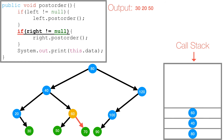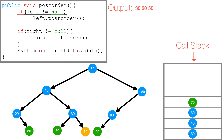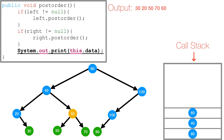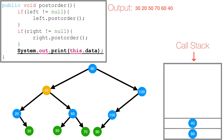We're back at 60. We check if 60's right is not null — it's not — so we call post-order on 60's right subtree. 70 gets pushed to the call stack. 70's left and right are both null, so we print 70, and 70 is popped off the call stack and we're back at 60. We've explored 60's left and right subtrees, so we print 60. 60 gets popped off the call stack and we're back at 40. We've explored 40's left and right subtrees, so we print 40, and 40 is popped off the call stack.